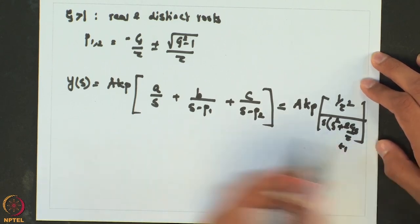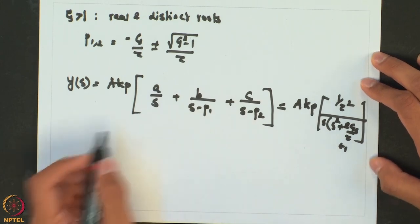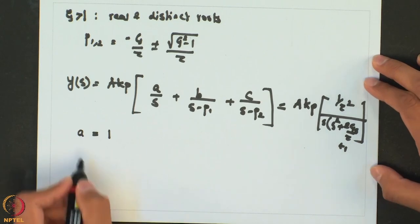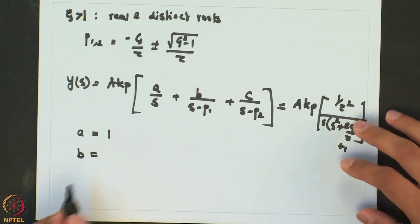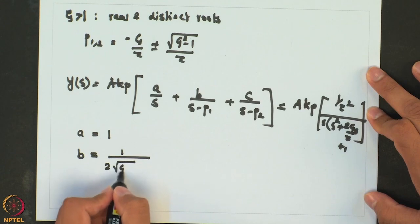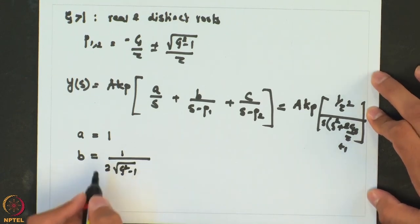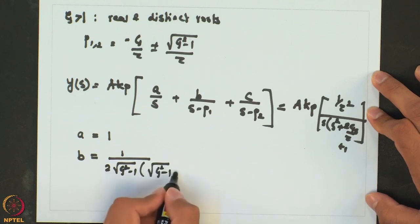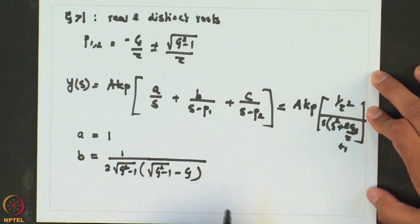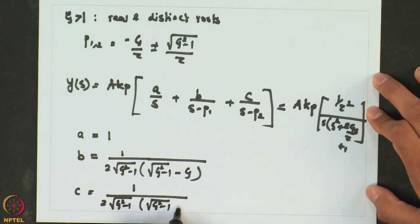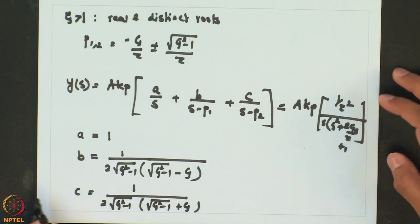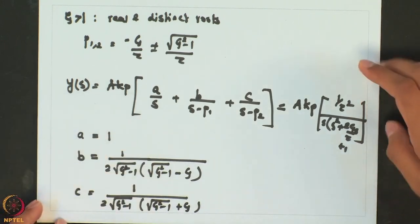Let us consider the case when zeta is greater than 1. In that case, we get real and distinct roots: p1,2 equals minus zeta over tau plus or minus the square root of zeta squared minus 1 over tau. Using partial fractions, we obtain A equals 1, B equals 1 over (2 times the square root of zeta squared minus 1) times (the square root of zeta squared minus 1 minus zeta), and C equals 1 over (2 times the square root of zeta squared minus 1) times (the square root of zeta squared minus 1 plus zeta).